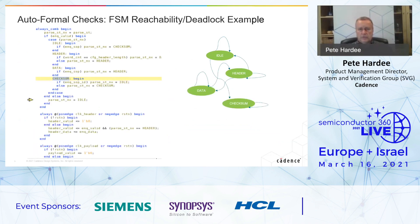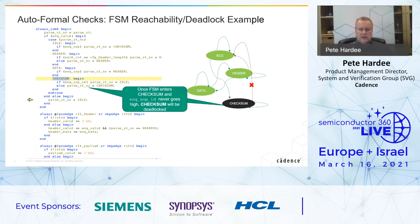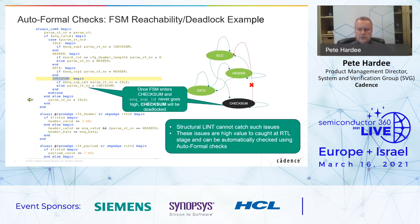The auto formal check for FSM reachability and deadlock: looking at the bubble diagram, we've highlighted the checksum state. The state can be reached and entered, but if that particular signal never asserts, then we're deadlocked in the checksum state and never able to leave it. This is an example of a check where structural lint will never catch it — it needs a formal check. These are high-value checks to catch at the early RTL stage, where the designer can change the FSM or whatever's driving that signal causing the deadlock.